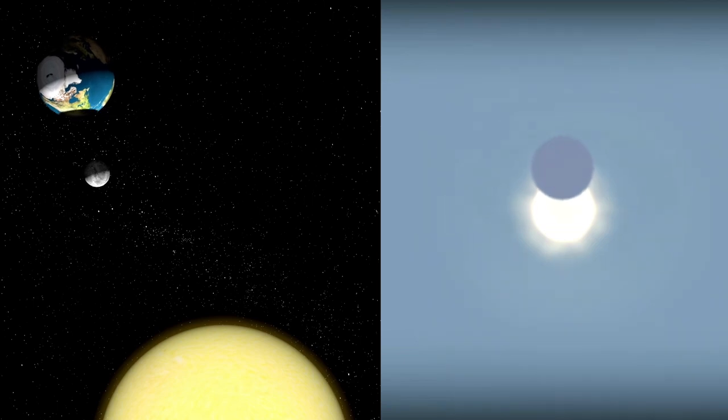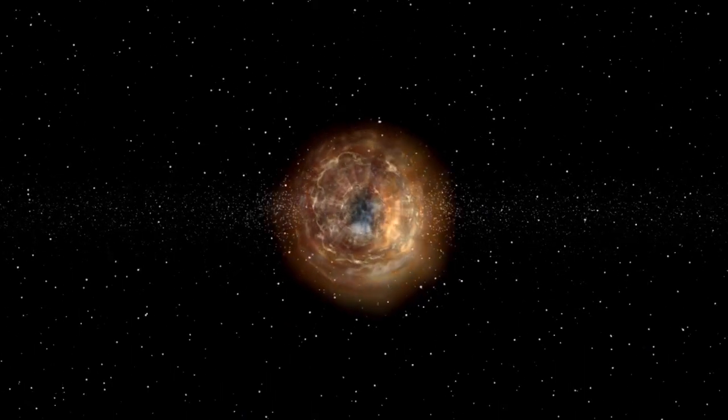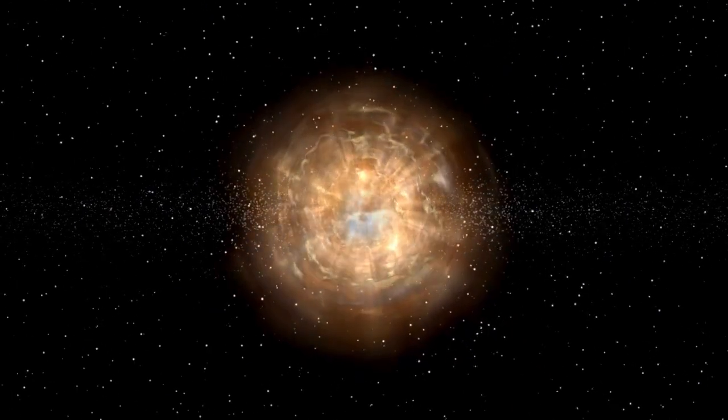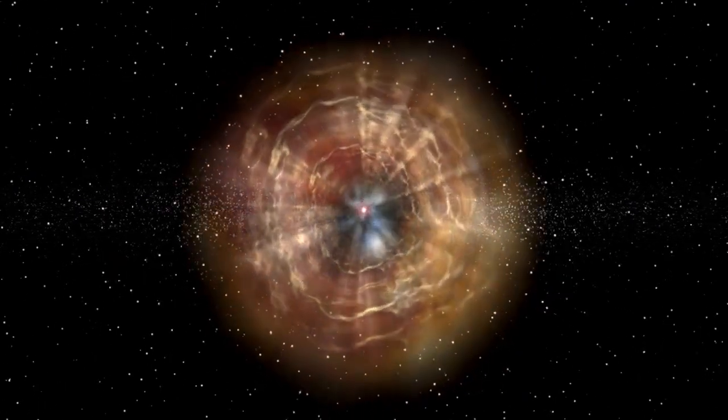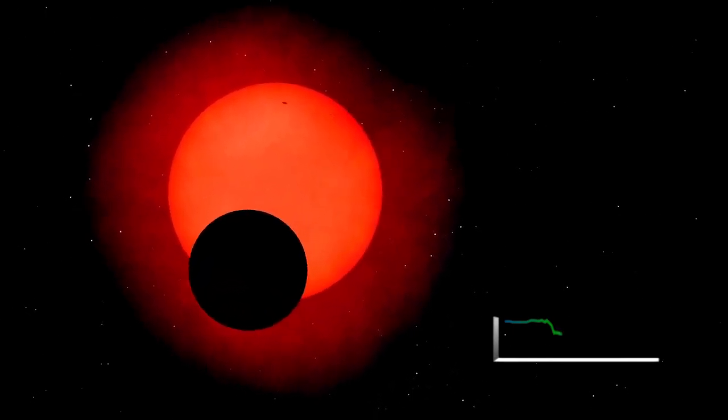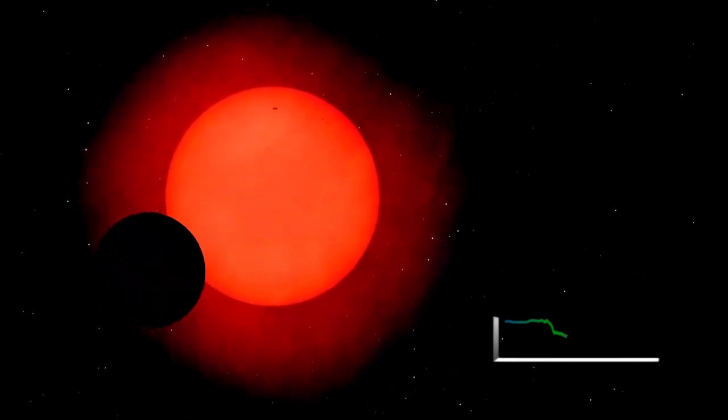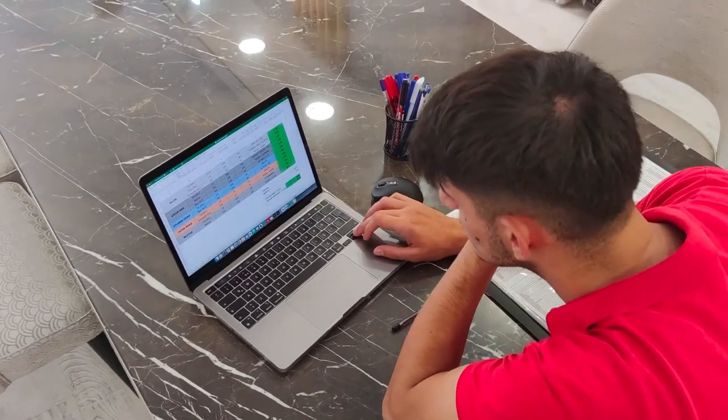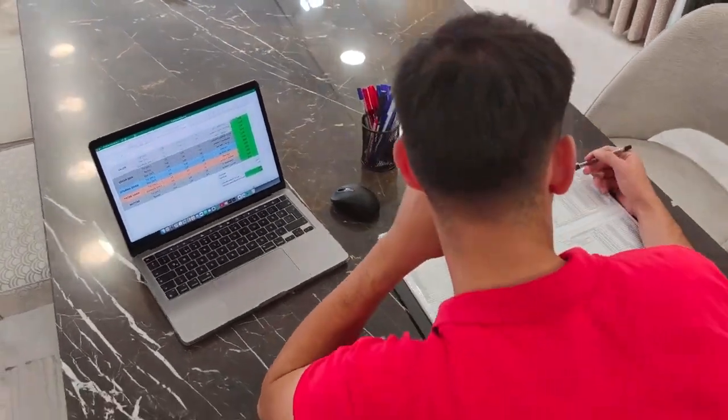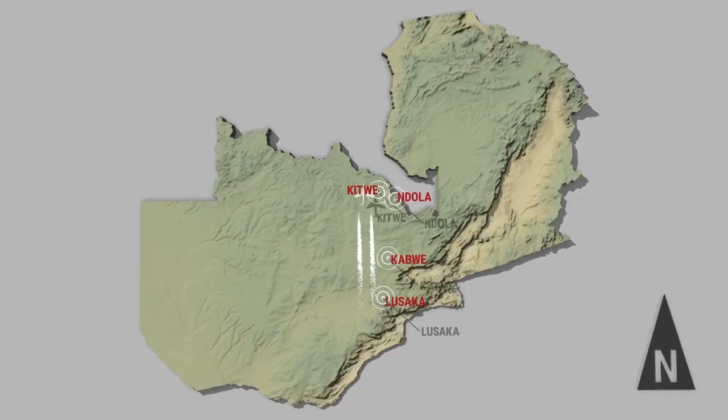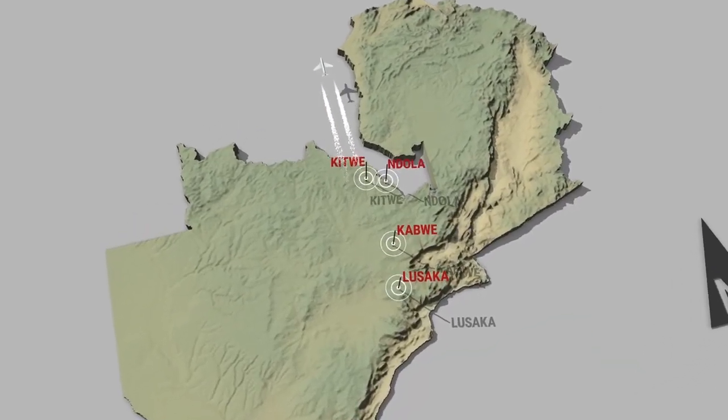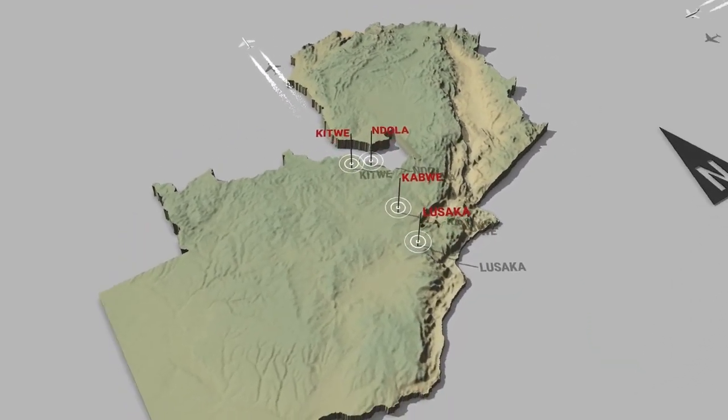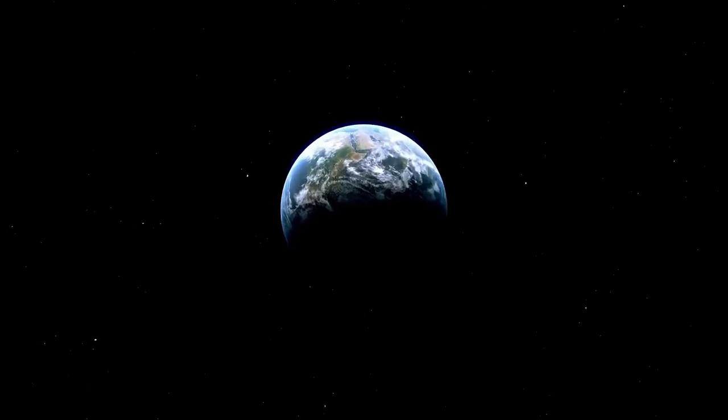Massive stars like Betelgeuse are complex laboratories of nuclear fusion, where the elements essential to life are created. The sudden brightening may indicate that fusion of heavier elements is intensifying, pushing the star toward its inevitable end. When fusion can no longer produce enough energy to counteract the force of gravity, the star collapses, leading to a dramatic explosion. If Betelgeuse is approaching this point, we may be witnessing some of the final warning signs.